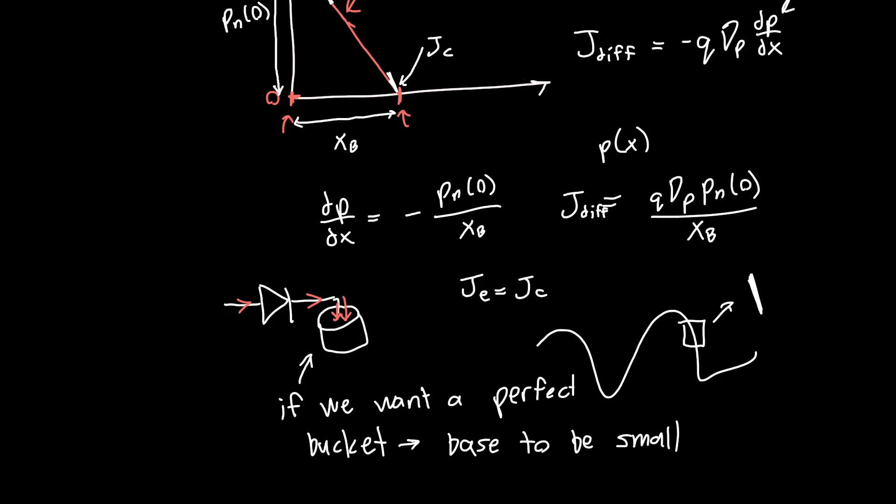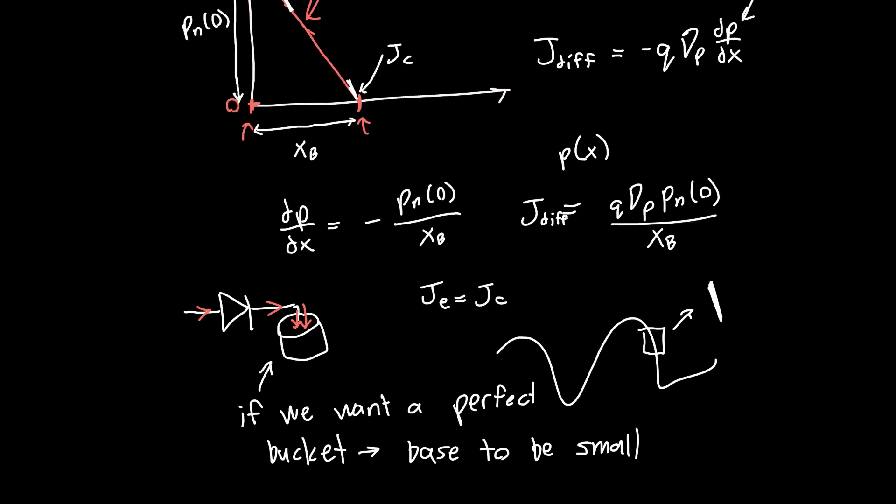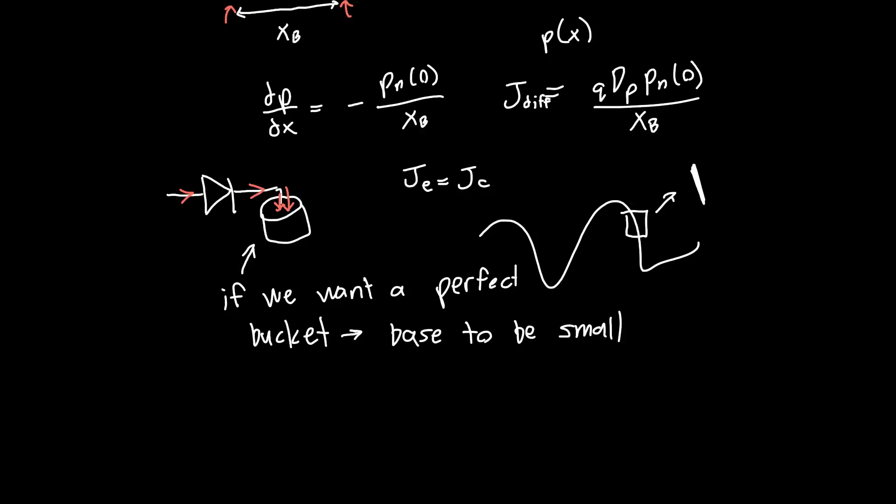That's interesting. So that tells us how we want to design this BJT. If we want to be able to get all the holes across this base region into the collector. And so what do we want this base to be small compared to? We want it to be much smaller than the diffusion length of holes within the base. So if the holes manage to not crash into anything, or not recombine, then this is a valid assumption. But what if XB is not much less than LP? What if it's on the order of LP? Well, this is what we're going to take a look at in the next video.